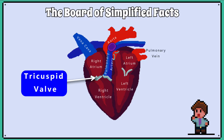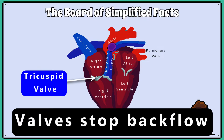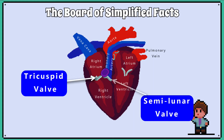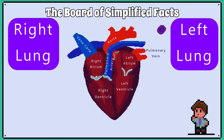The tricuspid valve between the right atrium and the right ventricle stops the blood from flowing back into the right atrium. Valves stop backflow, meaning they only let blood travel in one direction. The tricuspid valve shape means that when the blood pushes against the flaps, they shut and close the path between the right atrium and right ventricle. The same is true of the semilunar valve of the pulmonary artery — it stops the backflow of blood so that all the blood from the right ventricle travels up the pulmonary artery, where it splits to either the right or left lung.